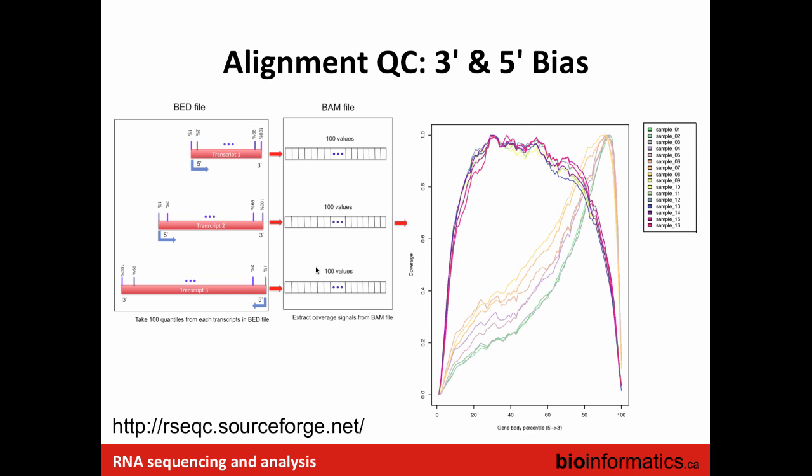Do you observe a similar pattern with ribosomal depletion? If the ribosomal depletion is good, you should get a pretty even distribution and it shouldn't bias you towards one end of the transcript.